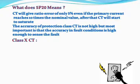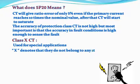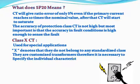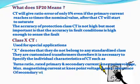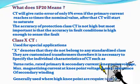Class X CT is used for special applications. X denotes that they do not belong to any standardized class; they are customized transformers. Therefore it is necessary to specify individual characteristics such as turns ratio, rated primary and secondary current, knee point voltage, maximum magnetizing current at knee point voltage, and maximum resistance of the secondary winding. They are generally used where high knee point voltages are required to prevent saturation at high currents.